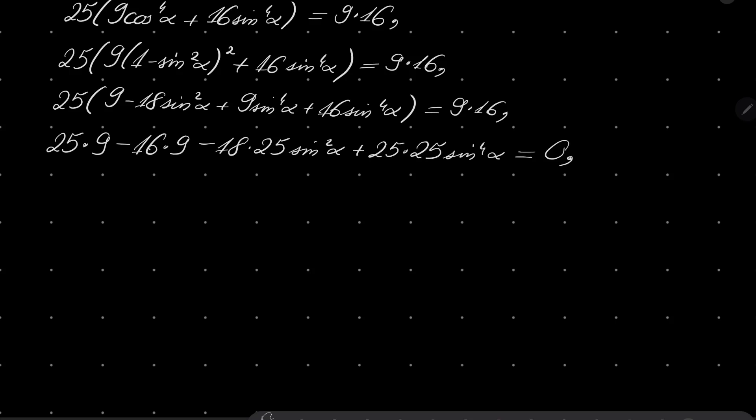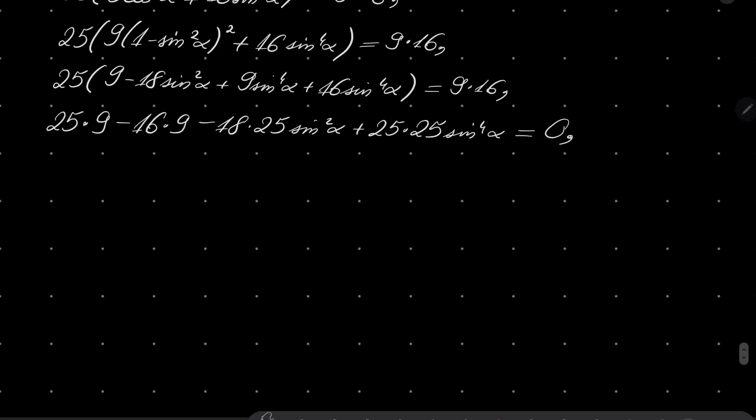And let's see what can be done. Let's write it in the following way. I will write this first: it's 25 sine squared of alpha squared. Then let's write this part: it's minus 2 times 25 sine squared of alpha times 9. And finally, let's write this part. This part is 9 times 9, so it's 9 squared.